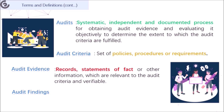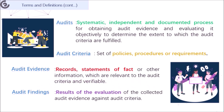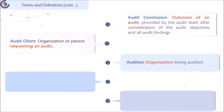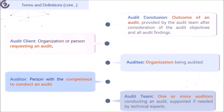Audit findings consist of results of the evaluation of collected audit evidence against audit criteria. The major roles in environmental auditing also need to be clarified. Audit conclusion refers to the outcome of an audit provided by the audit team after consideration of the audit objectives and all audit findings. Audit client means the organization or person requesting an audit. Auditee indicates the organization being audited, while the auditor means the person with the competence to conduct an audit. All participating auditors together form the audit team.